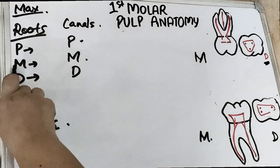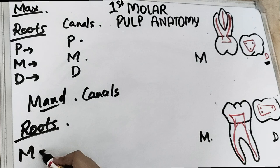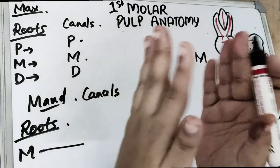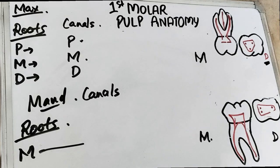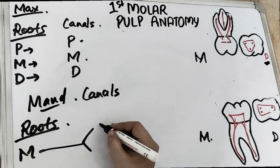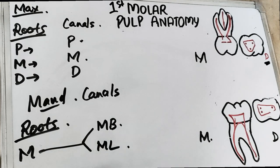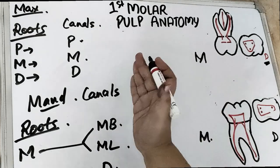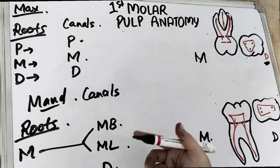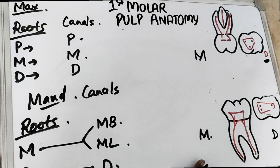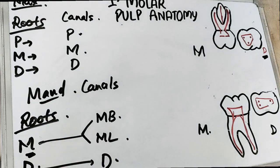For the mandibular, we have to make three canals out of two roots. In the mesial root, we place two canals — one in the buccal and one in the lingual — giving us mesio-buccal and mesio-lingual. The distal root gets the remaining one canal, which is the distal canal.